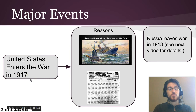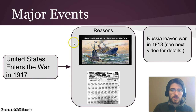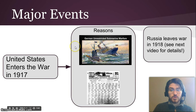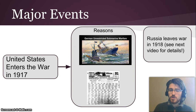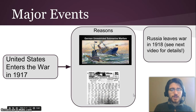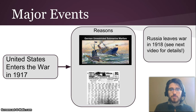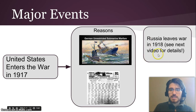The United States also enters the war — in 1917, almost at the end. The reasons include: Germans used submarines, sinking ships left and right regardless of whether they were civilian, and Germany offered through the Zimmermann Telegram for Mexico to join an alliance with Germany and regain territory the US had taken in the 1800s. Russia also leaves the war in 1918, but we'll talk more about that in the next video.